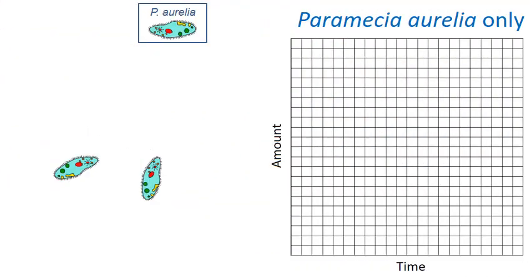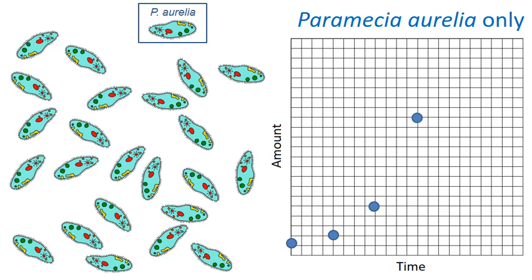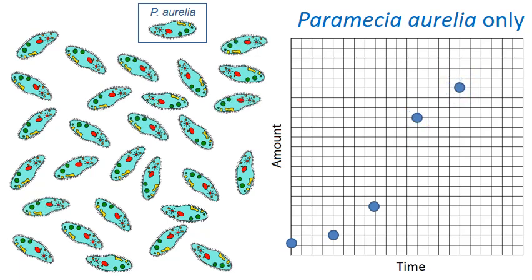A fairly famous experiment examined competition between microscopic organisms called paramecia, which live in freshwater ponds, rivers, and lakes. One species, P. aurelia, was grown alone in a lab setting with a steady supply of nutrients. Its population grew and multiplied over time, eventually leveling off into a plateau because food, even when provided, is still a limiting factor.